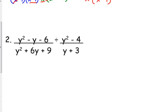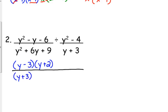Let's look at another one. It doesn't matter what variables we use. Let's look at one that has y's instead of x's: y squared minus y minus 6 over y squared plus 6y plus 9 divided by y squared minus 4 over y plus 3. First numerator: y minus 3 times y plus 2. First denominator: y plus 3 times y plus 3.